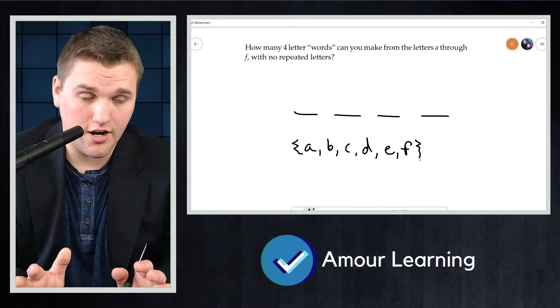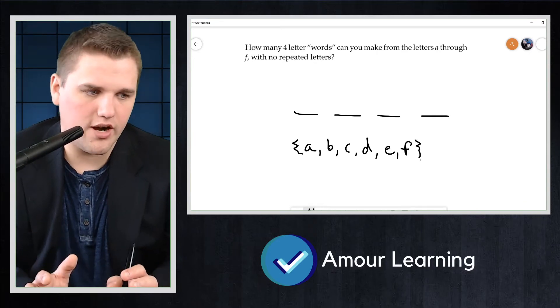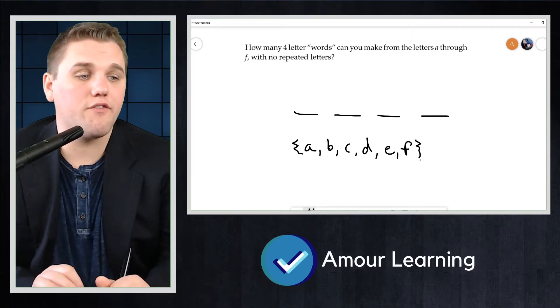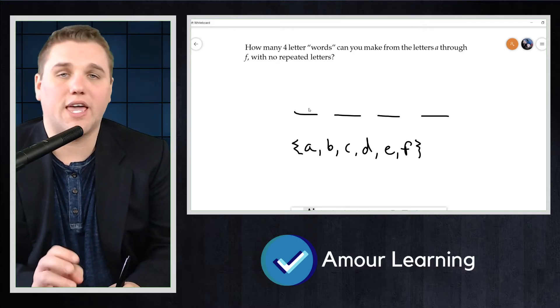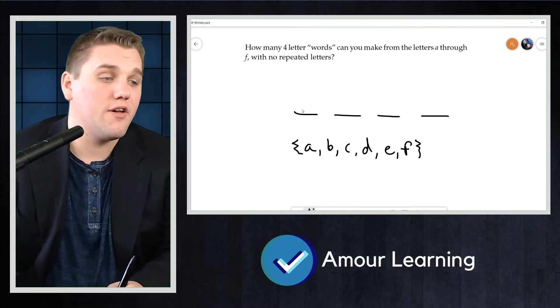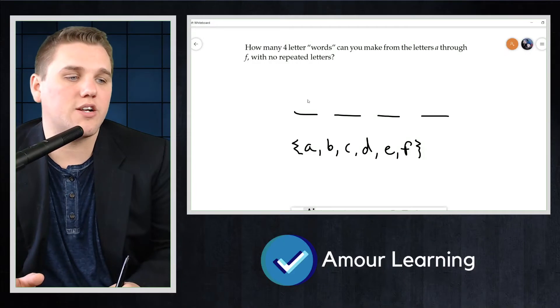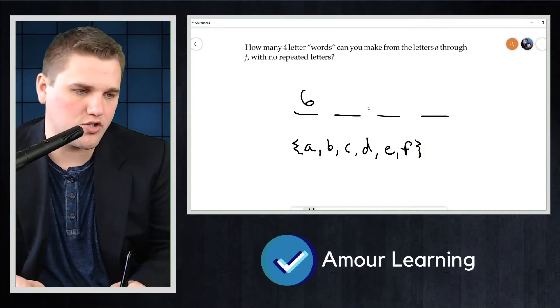So let's start with the first letter. What can we pick for the first letter? Well, we have a total of six options for this first letter. We can pick A, B, C, D, E, or F, which is six options. So there are six possibilities for the first one.